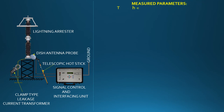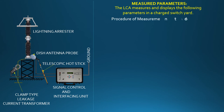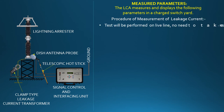The LCA leakage current analyzer measures and displays the following parameters on screen. The leakage current test will be performed by the LCA on a live line — no need to take a shutdown.